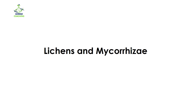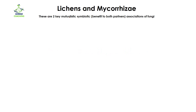Hello and welcome to Haemat Coaching. I'm your teacher Dr. Anam. Today we will study about lichens and mycorrhiza. These both are actually mutualistic symbiotic associations of fungi. Mutualistic symbiotic means that mutually they are getting benefits — fungi and their partner both are going to get benefits. That is why it is a mutualistic symbiotic association.